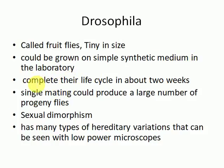After that, Drosophila completes its life cycle in about two weeks — approximately 14 to 15 days. This is quite a good thing because scientists do not have unlimited time for their experiments. They always want organisms with a very short life cycle so that experiments can be precise and completed in a short interval of time.